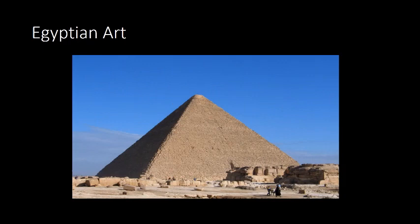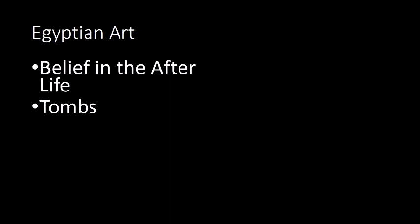When we say Egyptian art, probably the first thing that comes to our mind would be the pyramid. The beginning of the pyramid was rooted in the belief of the Egyptians in the afterlife. So the Pharaoh, during his reign, ordered his servants and slaves to create a tomb for him because they believed there is life after death. The early tomb of the Egyptians was called the mastaba.